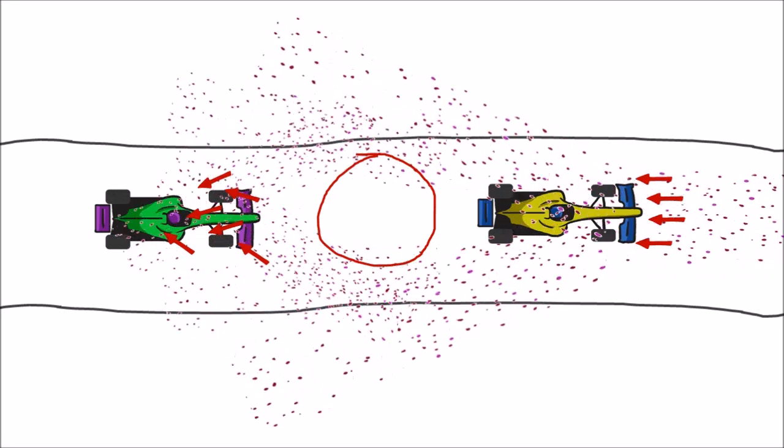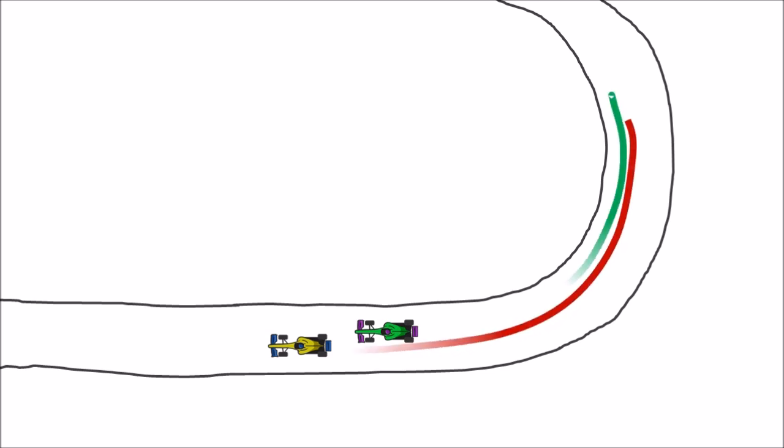How does this affect overtaking? Most overtaking happens on straights because that's the best chance you're going to get to build up some speed over the car in front. In order to do that, you need to come out of the corner before a straight at least as fast as the car ahead.